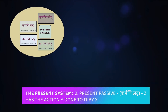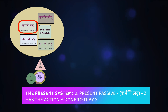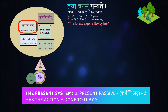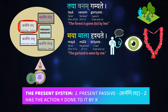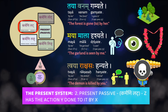We've also learned the karmani lat — the passive present tense — where the target or the object of the action is now the focus, and it gets put into the nominative, the first case, while the person doing the action is moved to the third case, the instrumental. So: taya vanam gamyate — the forest is gone to by her; maya mala drshyate — the garland is seen by me; tvaya rakshasaha hanyate — the demon is killed by you.